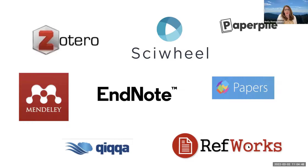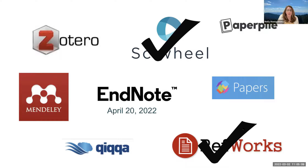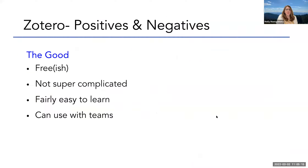Here are screenshots of the logos of many different reference managers. Some of these you may have used, some you may be familiar with, others maybe not so much. The Scholarly Snippets series has already covered how to use a few of these — we have webinars on SciWheel and RefWorks, and one on EndNote coming in April. I've been using Zotero for almost 20 years and I love it, but I know it's not all rainbows and butterflies — there are some things that could be improved upon as well.